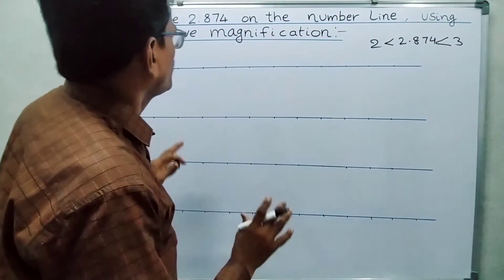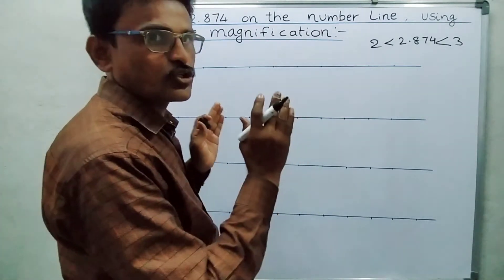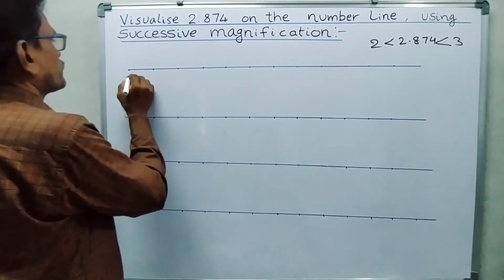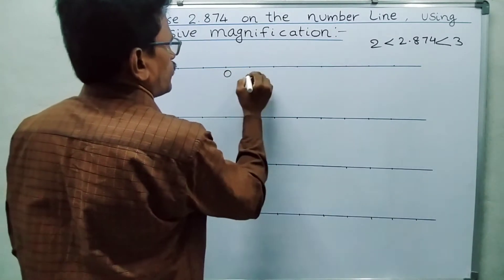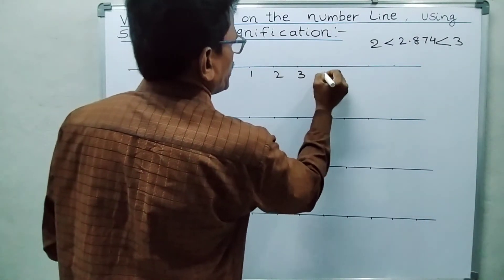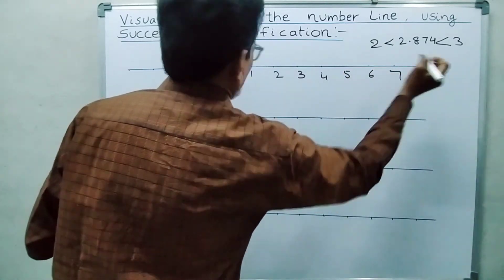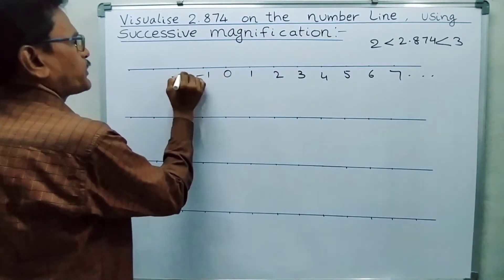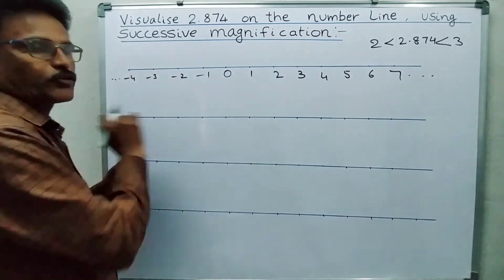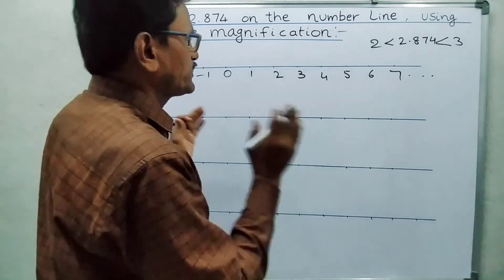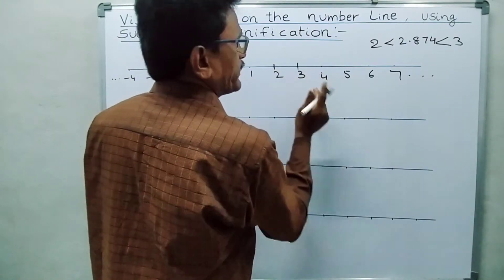First on the number line, we have to locate 2 and 3. We take 0, 1, 2, 3, 4, 5, 6, 7 as positive numbers, and minus 1, minus 2, minus 3, minus 4 as negative numbers. In this, 2 is here and 3 is here.